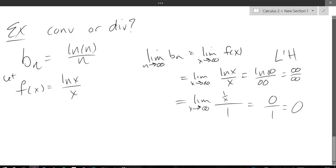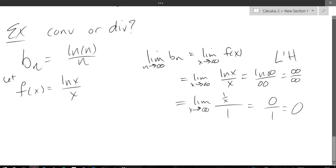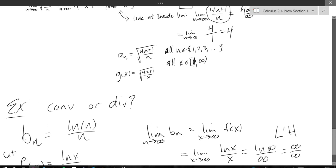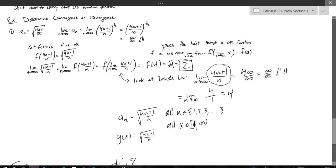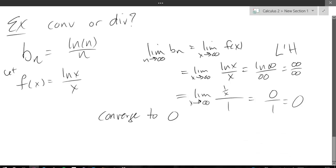You should have gotten zero for your limit. Convergent or divergent — what does zero mean? You get a number, so you're convergent; we converge to zero. I don't think I wrote convergent or divergent for the previous problem either — we got 2, also a number, so it's convergent to 2 for the previous problem. Make sure you answer the question that is asked: convergent to 2 and convergent to zero.